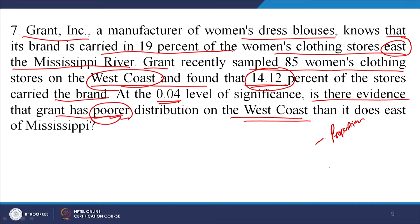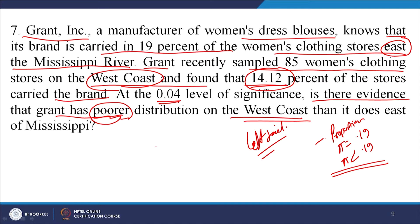What would be the null hypothesis? Initially, we say that the distribution is equal on the west coast and east coast. We frame the null hypothesis as pi equals 0.19, and the alternative hypothesis as pi less than 0.19. This is a case of a left-tail test. The sample size n is 85, and alpha is equal to 0.04.